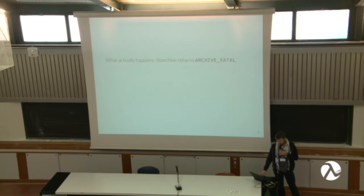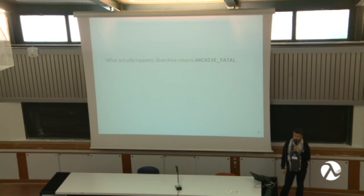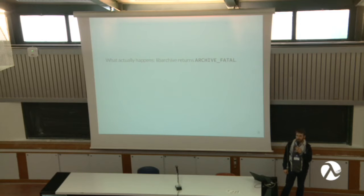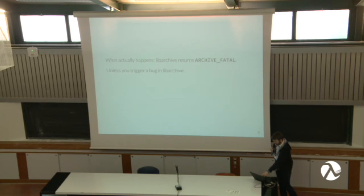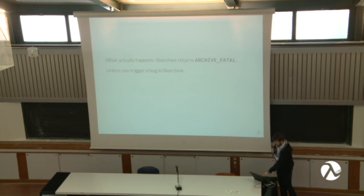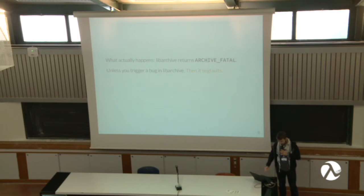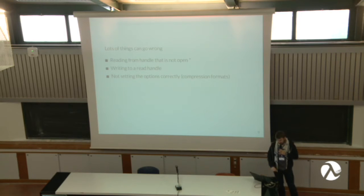We have these handles and we can open them — we pass an archive to it. We can configure them, because with an archive you have to say what kind of data type it is: maybe it's a zip file, maybe a tarball, maybe compressed with LZMA. Then you can read or write to them, and also close them. But what if we screw up? Since both read and write handles are exactly the same type, you could read from a write handle or write to a read handle — and that leads to segfaults, which are not nice to debug.